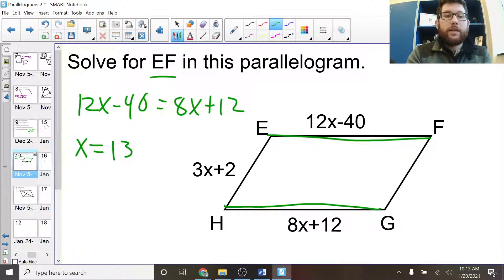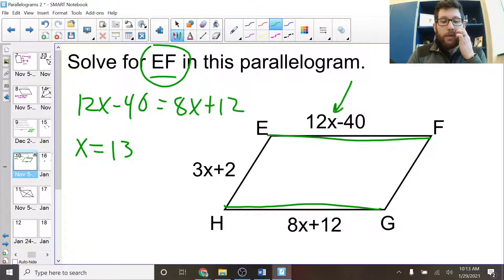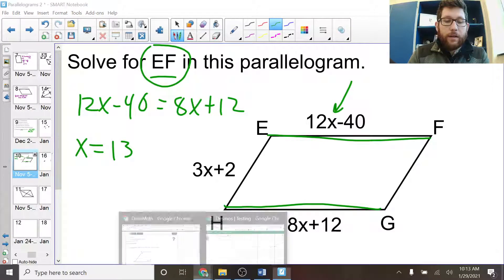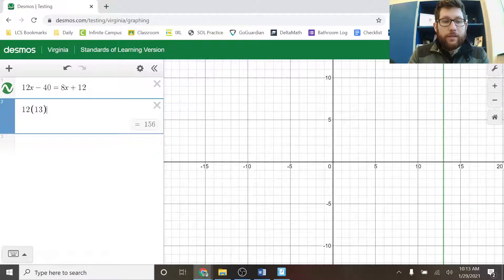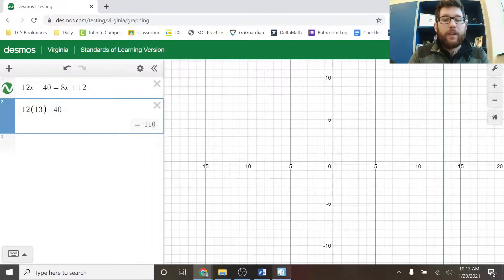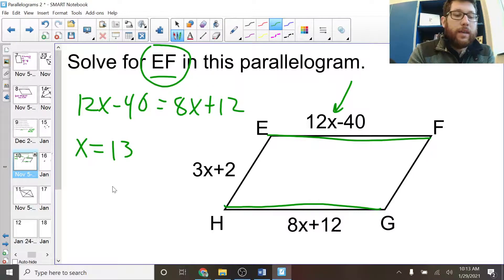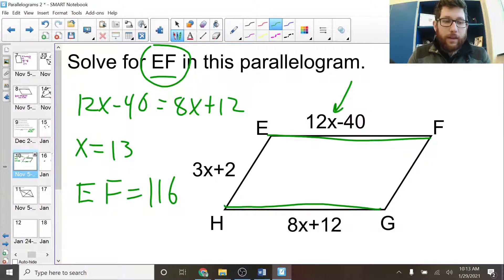Now what I need to do is take this EF distance. I want to find the EF distance. So I'm going to plug in for the x with EF. I've got 12x minus 40. So I'm going to plug 13 in there. 12 times 13 minus 40. And what do I get? I get 116 as a final answer. If I plug in 13, I'm going to get the problem wrong. So x is equal to 13, but EF is equal to 116. Just be on the lookout for something like that.